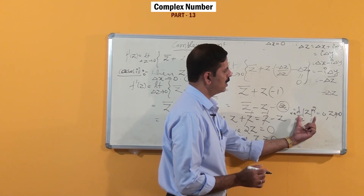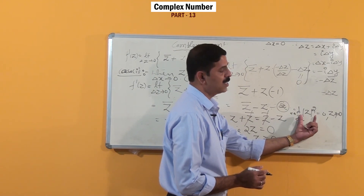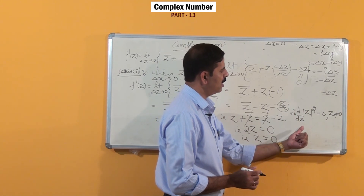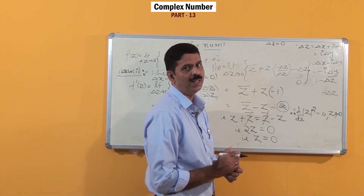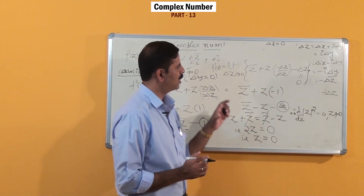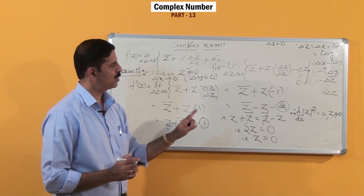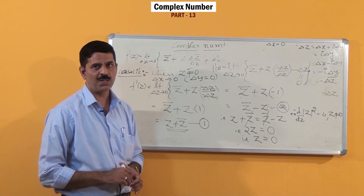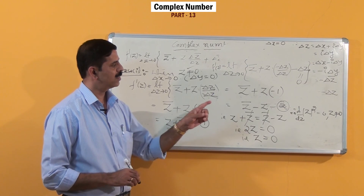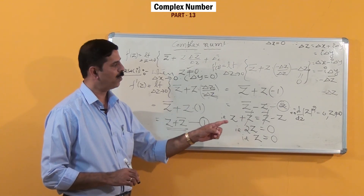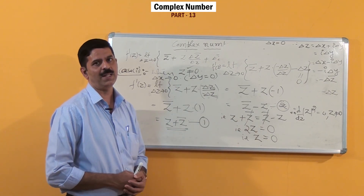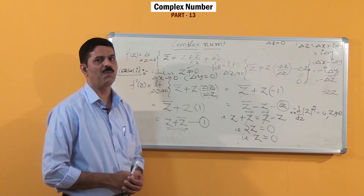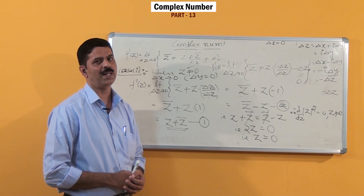Therefore |z|² is not differentiable when z ≠ 0. The general conclusion is that the function |z|² is not differentiable for all values of z except z = 0. Thank you. We will continue with more problems in the next class.